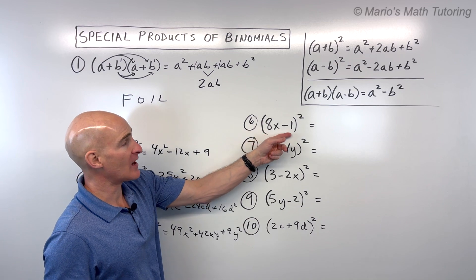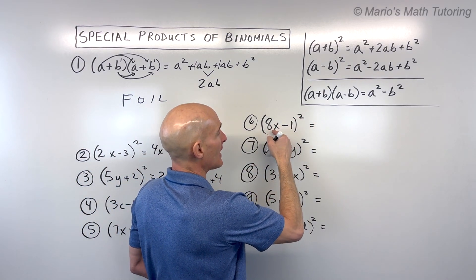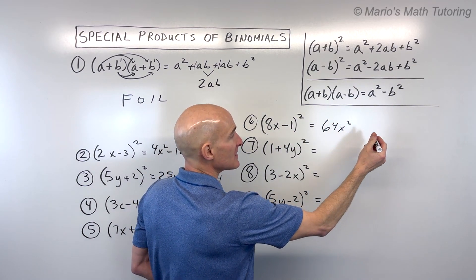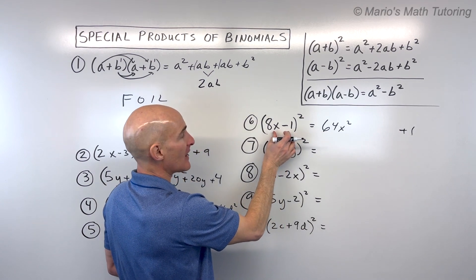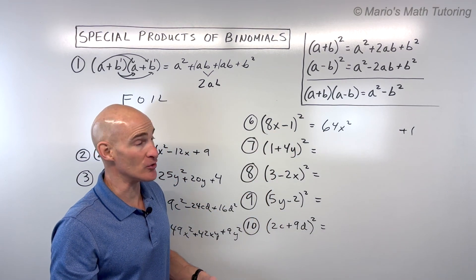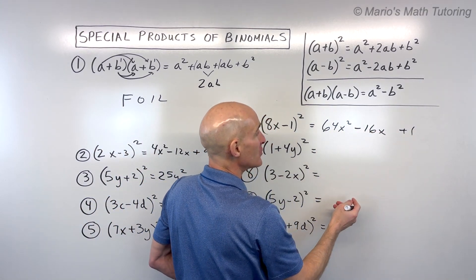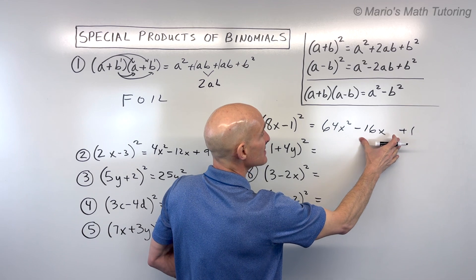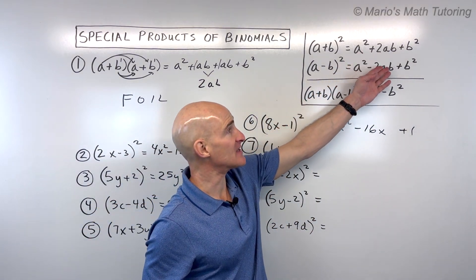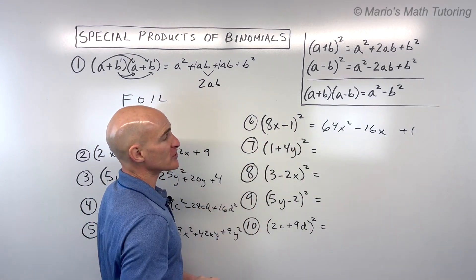Number six: we've got a binomial squared, so using the special pattern — 8x times 8x is 64x squared. Negative 1 times negative 1 is positive 1. For the middle term, a times b doubled gives us negative 8x, doubled is negative 16x. If we were given the expanded trinomial, we could factor it back to this binomial squared — that's called a perfect square trinomial.